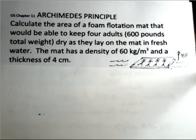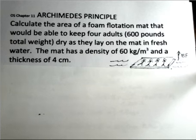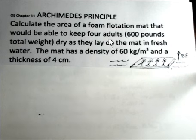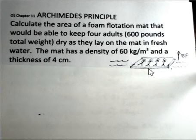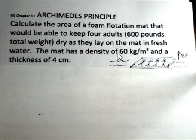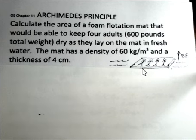In this example of Archimedes' principle, we'll be using the concept of buoyant force. We're going to do the calculation supposing that four adults who have a total weight of 600 pounds are going to lay on this mat, and the mat has a density of 60 kilograms per cubic meter and a thickness of 4 centimeters. We're going to find the minimum area for this mat.